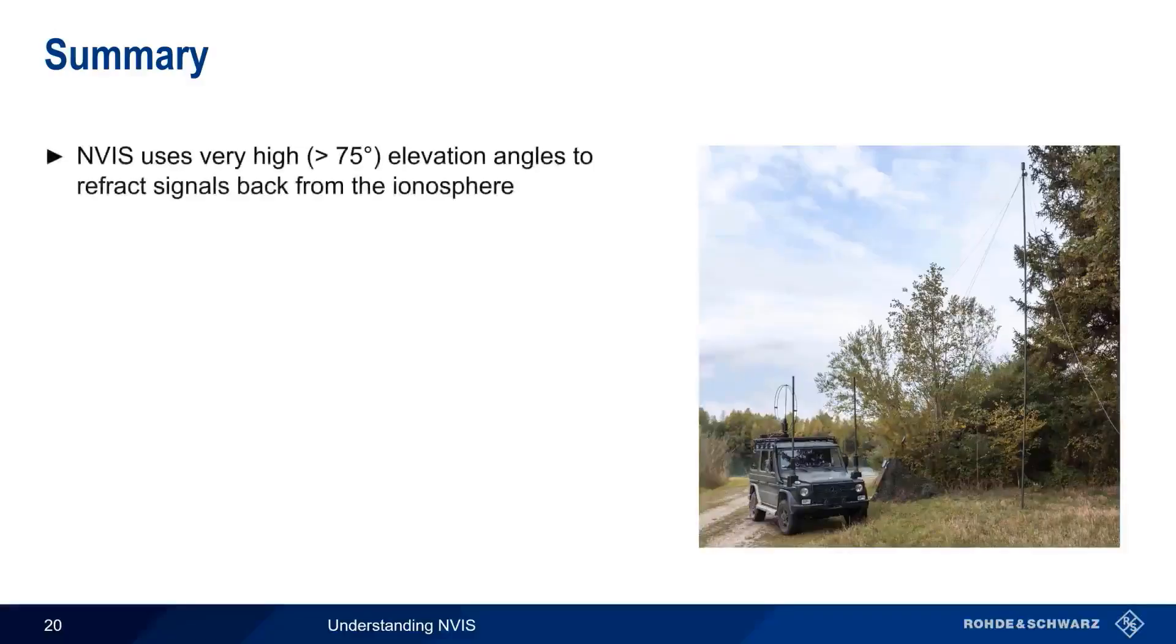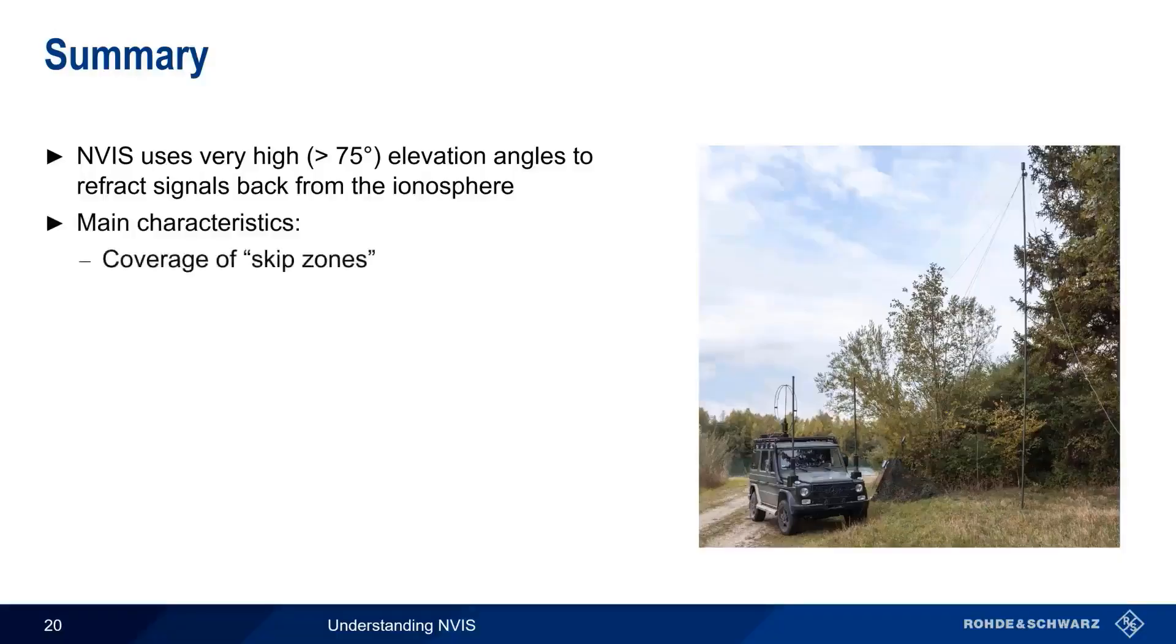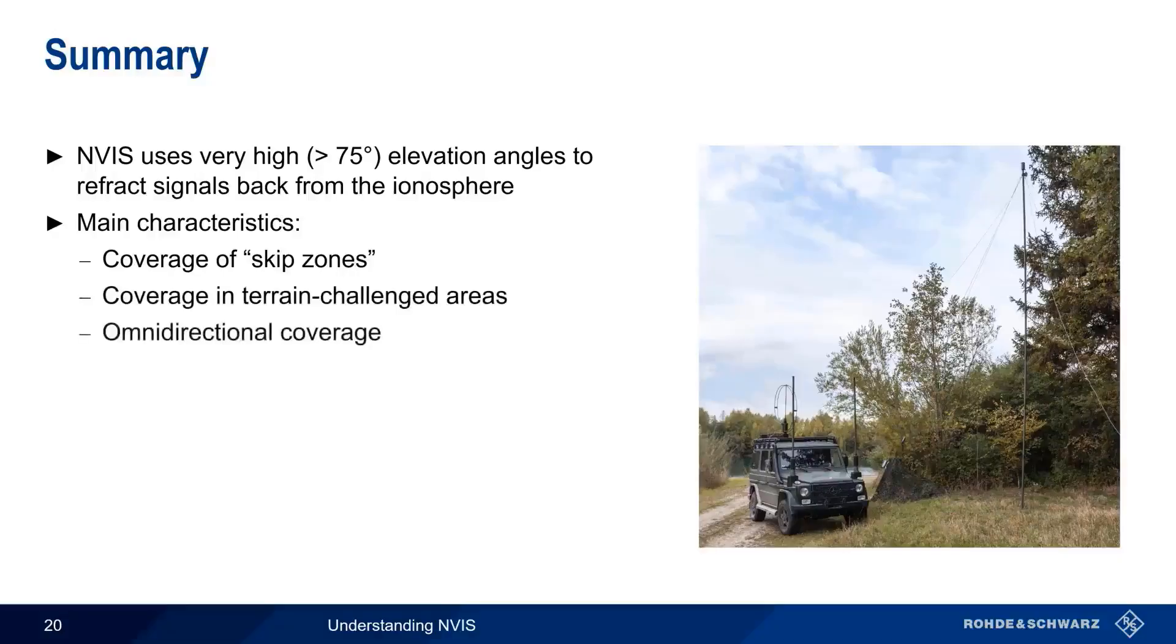Let's summarize what we've learned. NVIS, or Near Vertical Incident Skywave, is a special type of skywave propagation that uses antennas which are designed and installed in order to produce very high elevation or takeoff angles, typically 75 degrees or more. Unlike traditional low-angle skywave signals, the signals from a NVIS antenna are returned from the ionosphere almost vertically, and this is what gives NVIS its main characteristics. The first of these is that NVIS can provide coverage in so-called skip zones that can be created by the lower elevation angles used in traditional skywave communications. NVIS is also useful in communicating within areas where ground wave is impractical, such as mountainous or jungle regions. The roughly omnidirectional coverage pattern provided by NVIS makes antenna sighting and orientation less critical, and also facilitates communication with mobile stations or with stations whose locations are not well known.